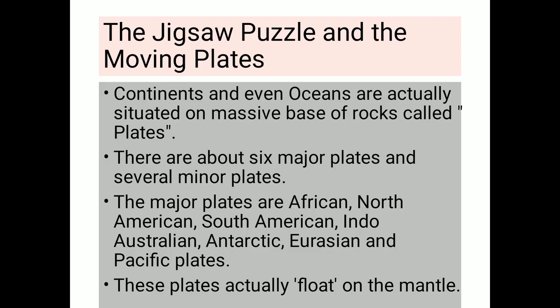There are about six major plates and several minor plates. All these plates are under the crust. Crust is the first layer of the earth; after the crust, upon the mantle, these plates are there. The major plates are African, North American, South American, Indo-Australian, Antarctic, Eurasian, and Pacific plates. Several minor plates are also there, like the Asterisk plate and Arabian plate.